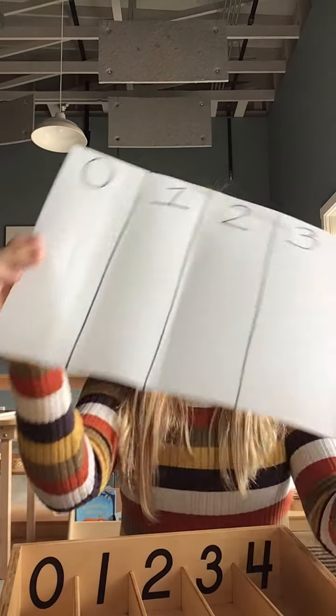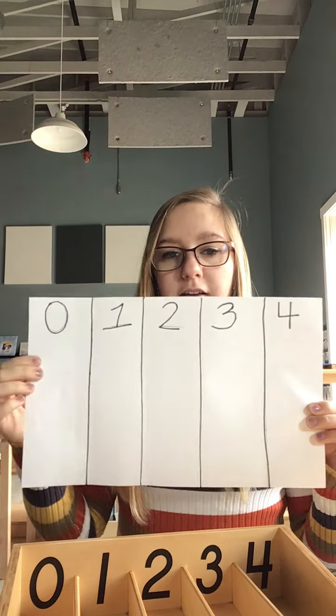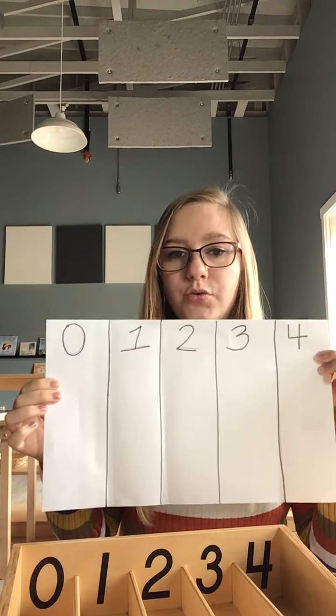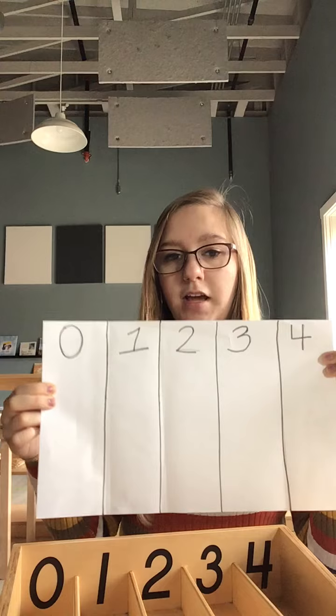So first, all you'll need is a piece of paper and a marker to make your sections. So this is my first box. I have 0 through 4, and I just used a sharpie and a ruler to make the lines straight.